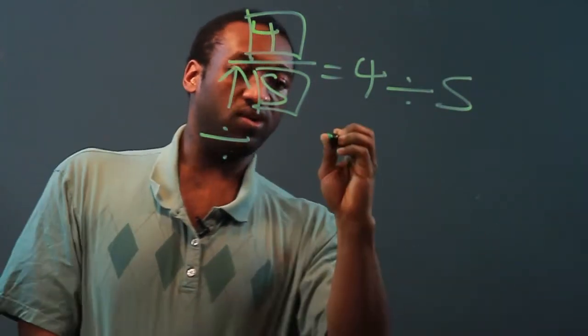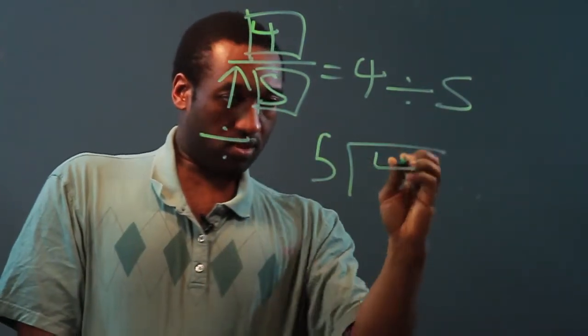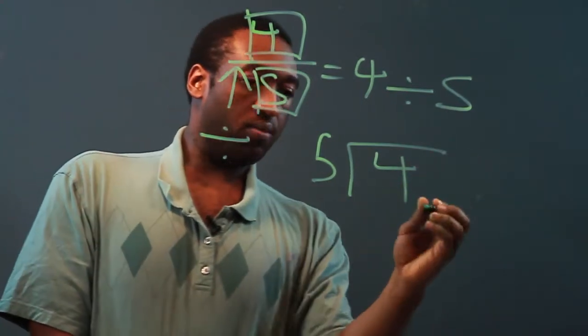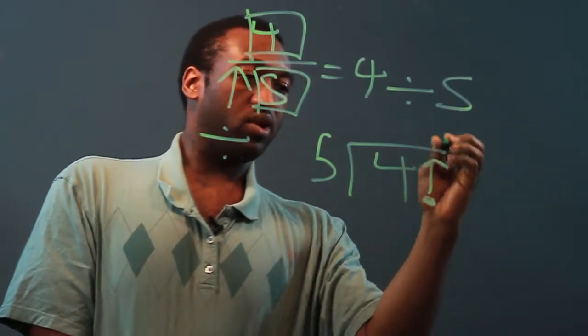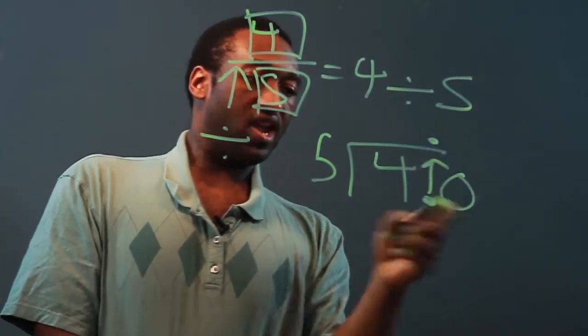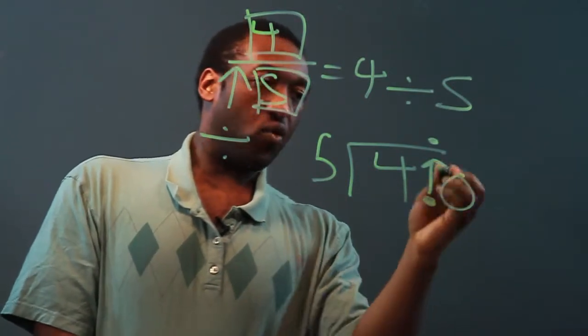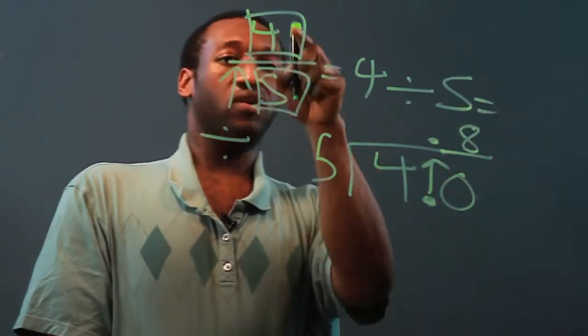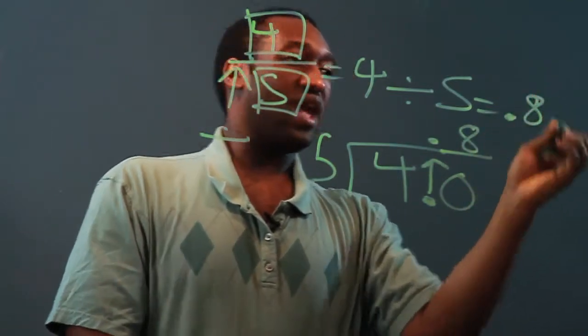Let's go with the long division here. 5 does not go into 4, so we'll add a decimal place, bring it up into our quotient, add a 0, 5 goes into 40 8 times. So the decimal equivalent of 4 fifths is .8.